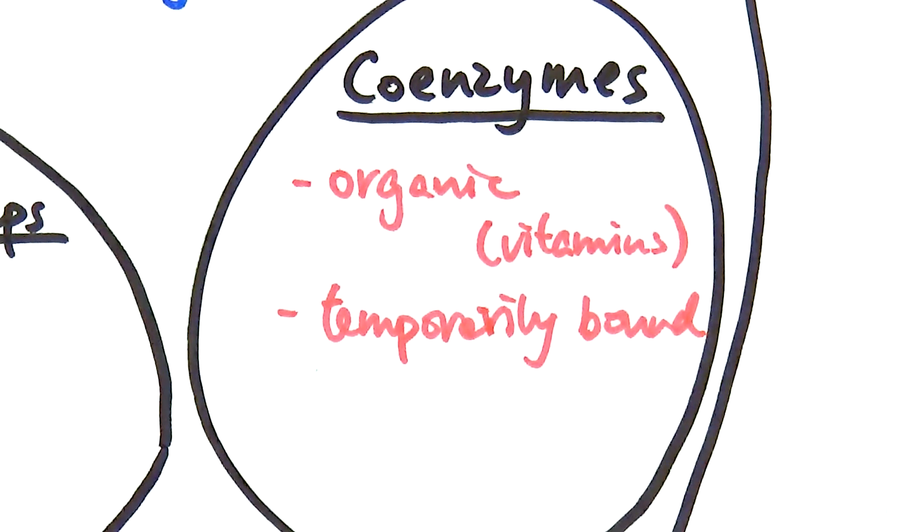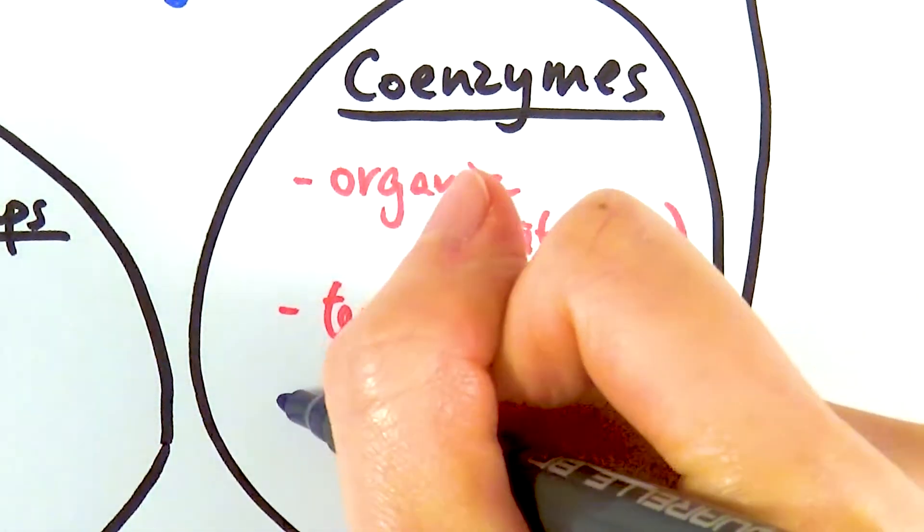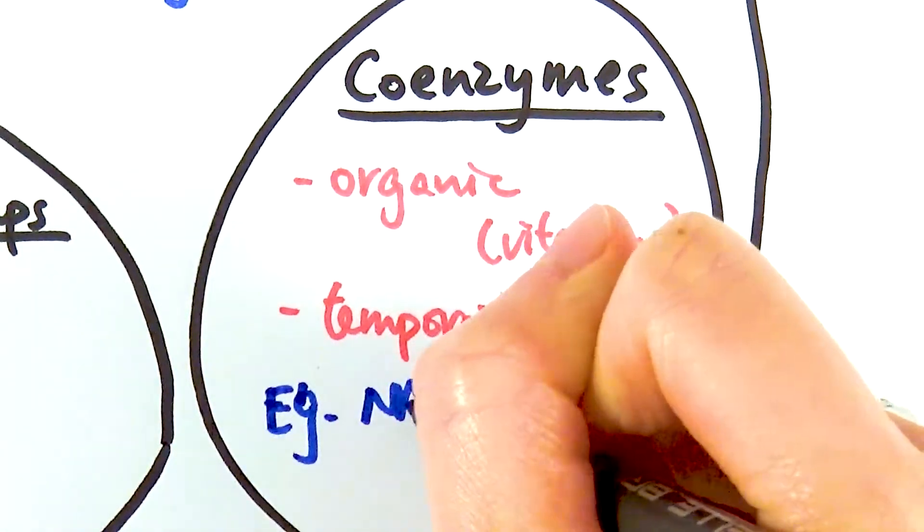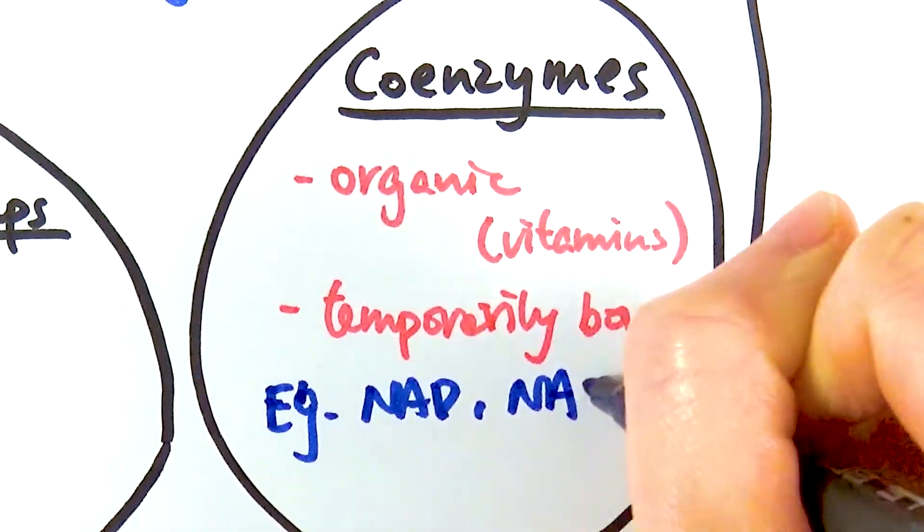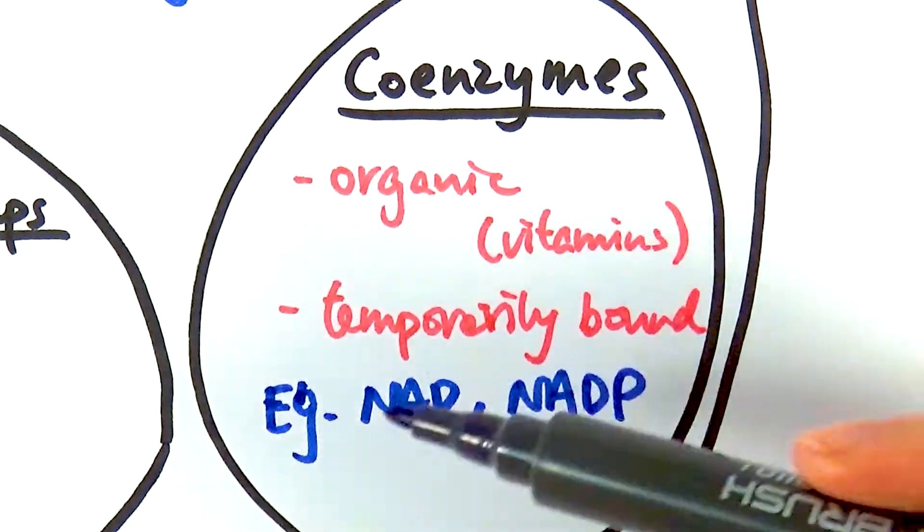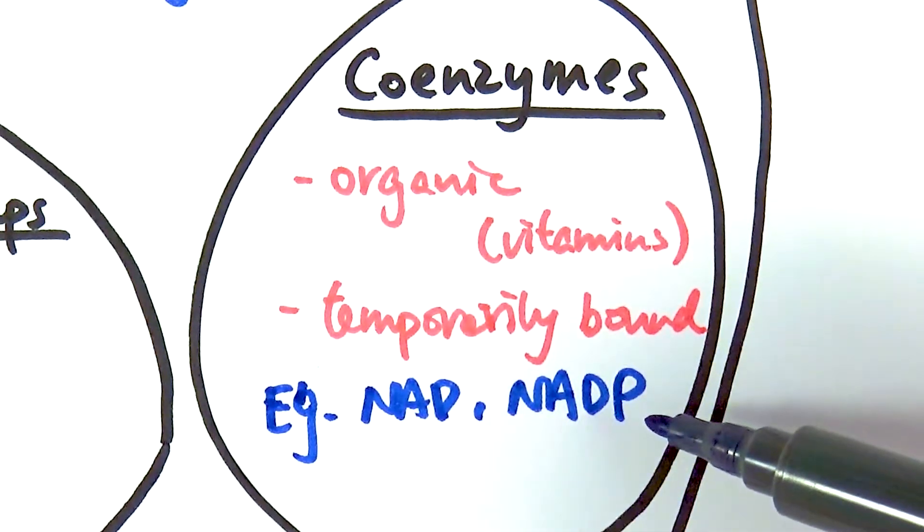There are two particular examples of coenzymes that you need to be aware of. You will actually learn about them again when you go into the A2 content. These two examples are actually called NAD and NADP, which are actually involved in respiration if it's NAD, and NADP is involved in photosynthesis.